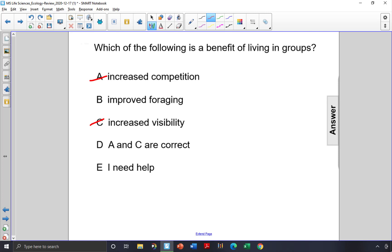Improved foraging is a good answer because if a few members of the group find a good space to forage, then other members of the group can forage there as well and the population can potentially grow. So the answer is choice B, improved foraging.